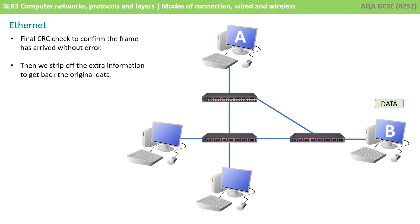After the CRC check has been performed, the header and CRC are stripped away and the computer is left with the data. This network is significantly more secure because the data only travelled between the switches it needed to, and the other computers on the network were completely unaware of the transmission. This is how the Ethernet protocol works.